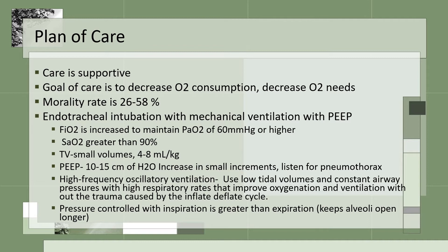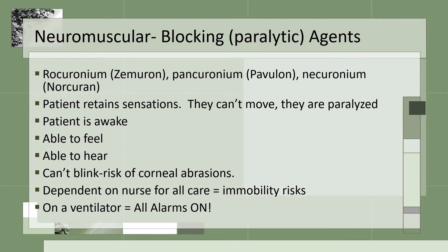Pressure control with inspiration greater than expiration helps keep the alveoli open longer. Patients with ARDS are often given neuromuscular blocking agents — paralytic agents — so they don't fight the ventilator and can have complete rest. Common names are rocuronium, pancuronium, and vecuronium. Remember that the patient retains sensation — they cannot move, they are paralyzed, but they are awake and able to feel and hear. They cannot blink, putting them at risk for corneal abrasions, and they are dependent on the nurse for all care with immobility risks.